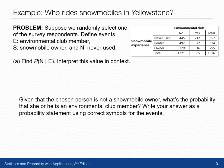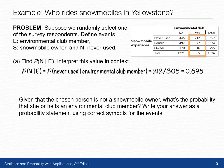For Part A, let's find the probability of N given E and interpret this value in context. Since this is a conditional probability, we must be careful about which part of the two-way table we look at. We're given the respondent is an environmental club member, which restricts our focus. We're not looking at all 1,526 respondents — only the 305 who said yes, they were part of an environmental club. Of those, 212 have never used a snowmobile. So the probability of N given E is 212 divided by 305, or 0.695.